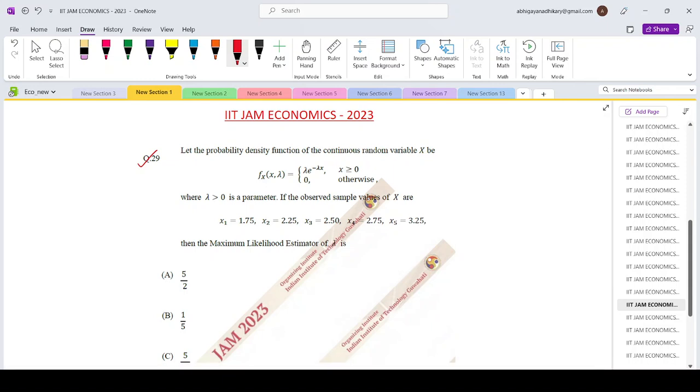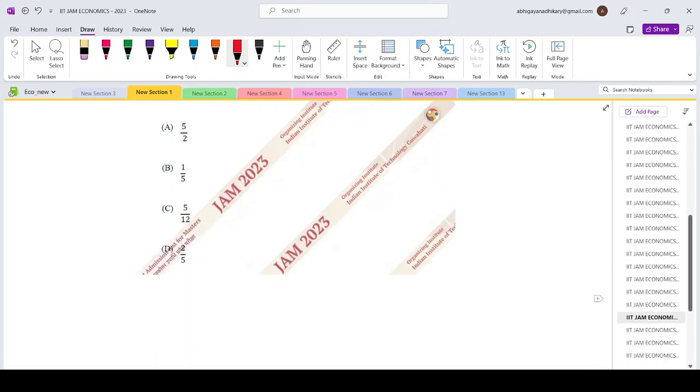The PDF of a continuous random variable is given in this manner where lambda greater than zero is a parameter. If the observed sample values of X are 1.75, 2.25, 2.50, 2.75, and 3.75, then the maximum likelihood estimator of lambda is what?